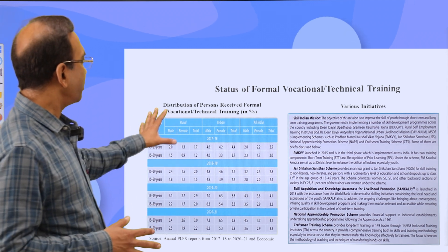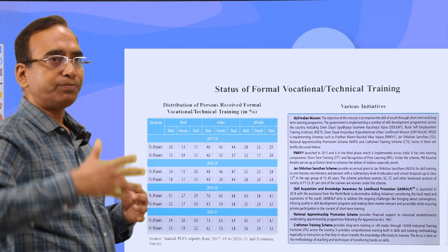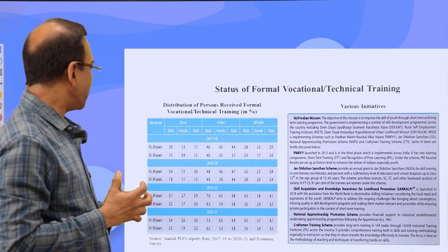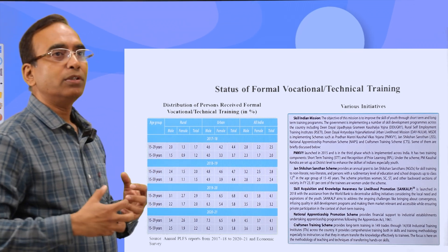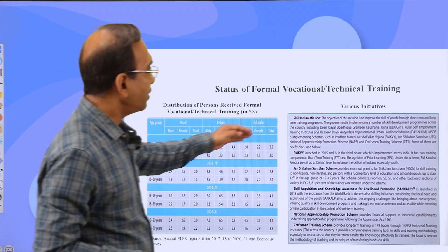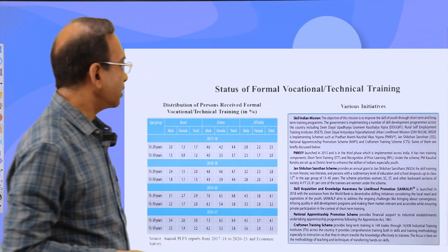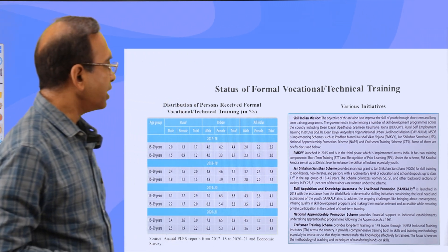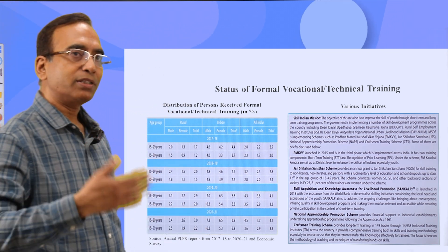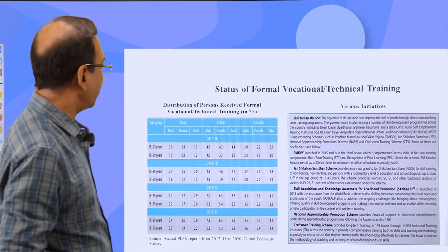This slide provides an idea about the distribution of persons who received formal vocational training. Not everyone needs to reach the highest level of education; vocational capabilities combined with some education are very important for India to push people into the job market with certain skills. Several initiatives have been taken over the years — Skill India Mission, Janashiksha Sansthan Scheme, SANKALP (Skill Acquisition and Knowledge Awareness for Livelihood Promotion), and the National Apprenticeship Promotion Scheme. Government after government has provided incentives for developing vocational skills.